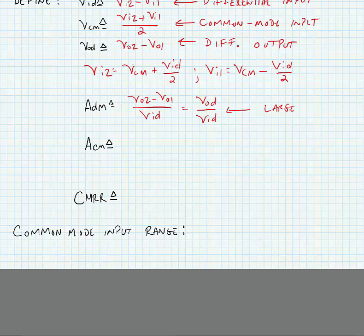We have a common mode gain ACM. This is equal to VO1 over VCM or VO2 over VCM. And of course, we would like this to be small.